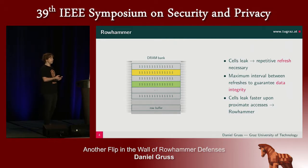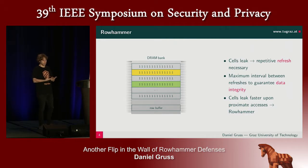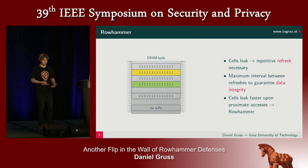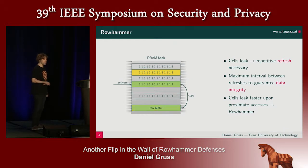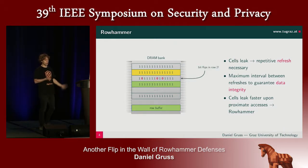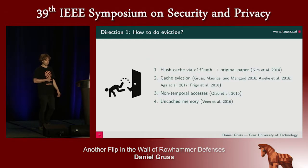There is an effect that leads to the so-called Rowhammer effect, which is that cells leak fast upon proximate accesses. And we're going to exploit that. So if you activate those rows, after a while, you will see bit flips.